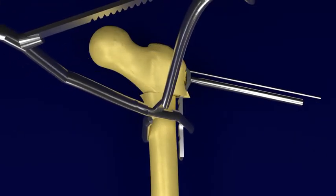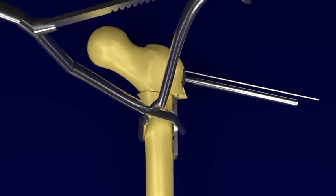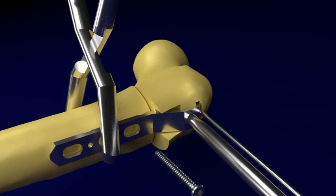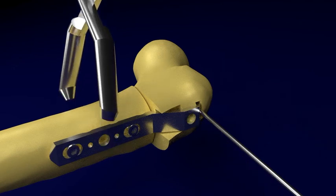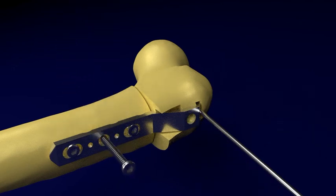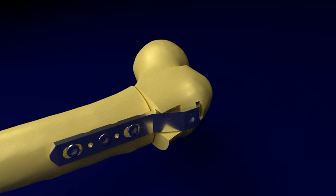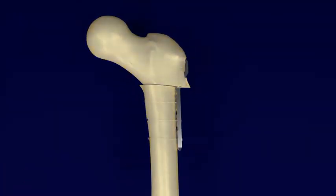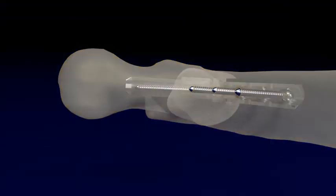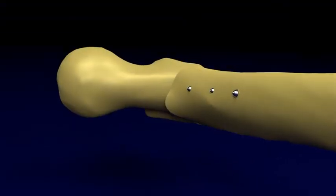Non-locking screws are placed in the first and third position. The cannulated holder is removed, the clamp is removed, and the hip is taken through a range of motion. Following this, locking screws are placed, stability is tested, the wound is irrigated and closed in layers with a waterproof adhesive dressing. We rarely use Spica casting for this type of fixation.